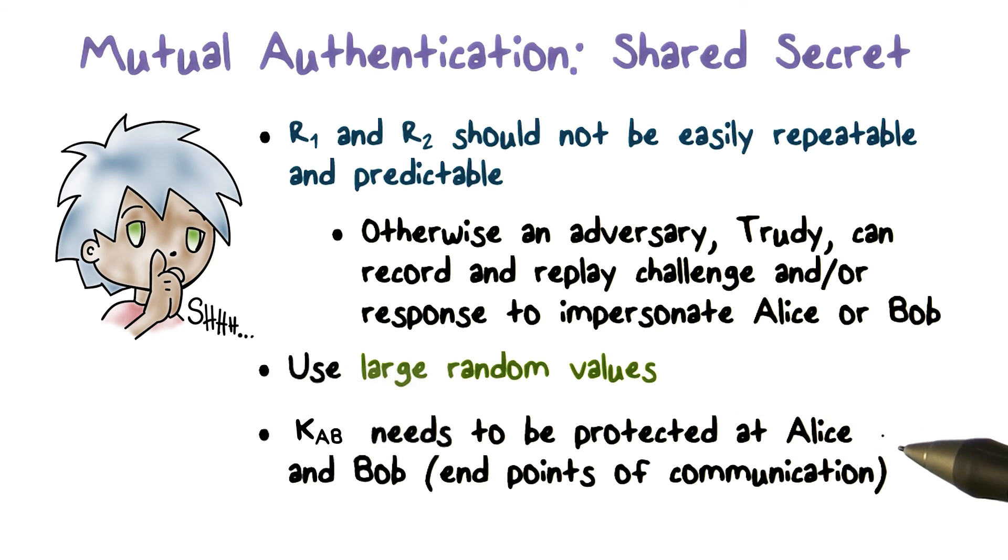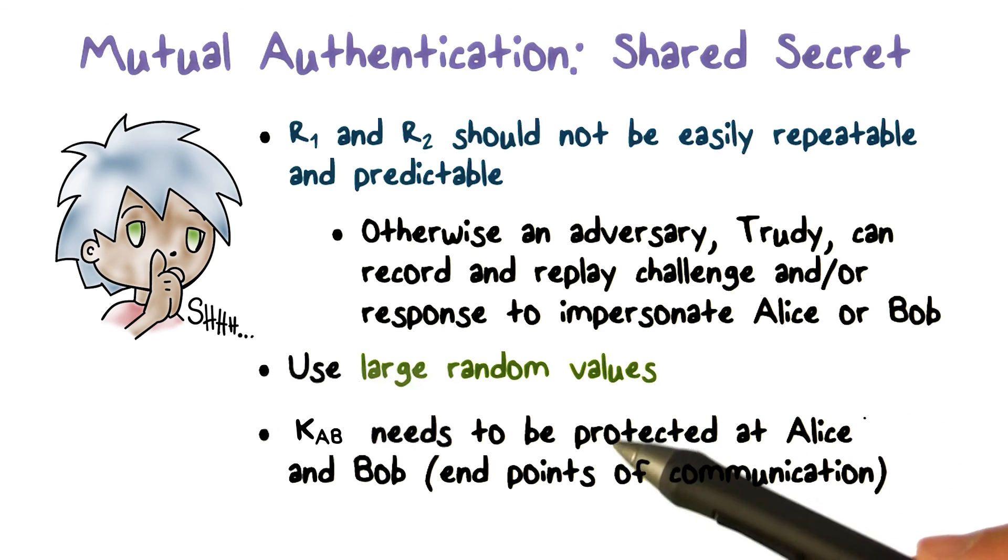Another security precaution is that the shared secret key, KAB, needs to be protected. Because if Trudy can steal a copy of the key, let's say from one of the communication endpoints either on Alice or Bob, then she can impersonate either Alice or Bob. In other words, the security of the endpoint is as important as the security of the link between the two endpoints.